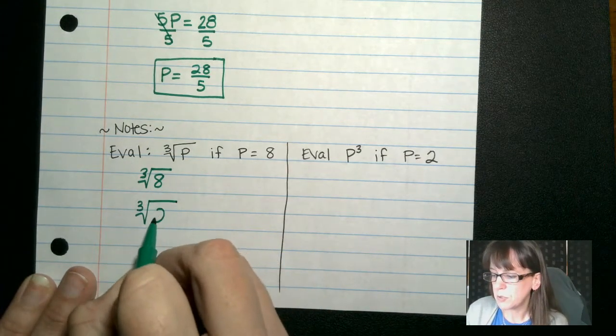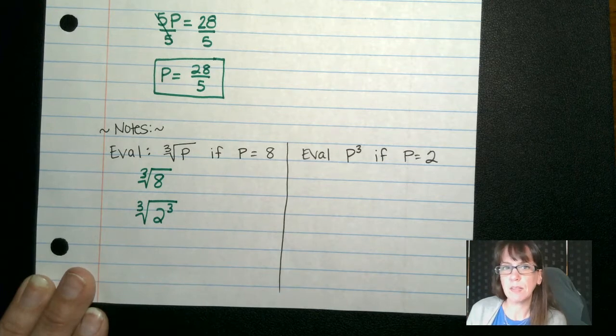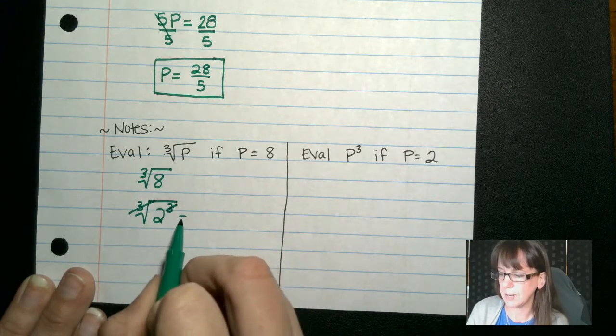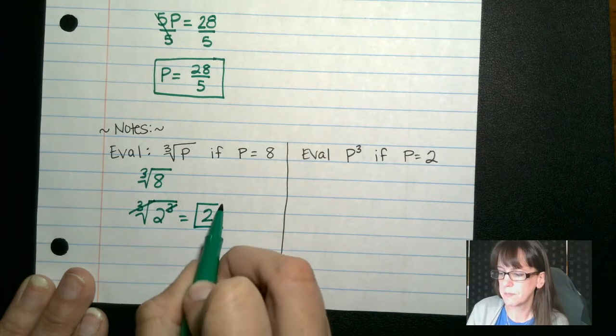Well, if I do 2 to the 3rd power, that would give us 8. And the cube root of 2 to the 3rd power, these guys cancel out, and I'm left with 2.